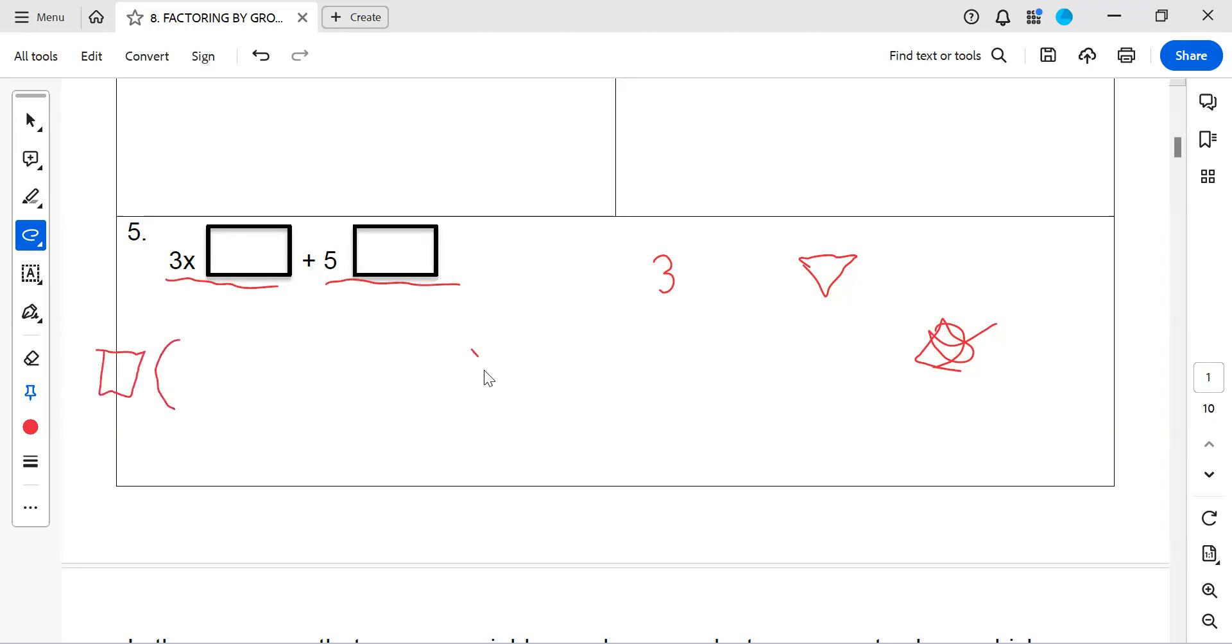So I'm gonna put my rectangle on the outside, then I'm gonna divide by my rectangle. Now rectangle over rectangle cancels to become 1, and we're left with that 3x. And rectangle over rectangle cancels to become 1, and we're left with the 5. And yes, we factored out the greatest common factor.